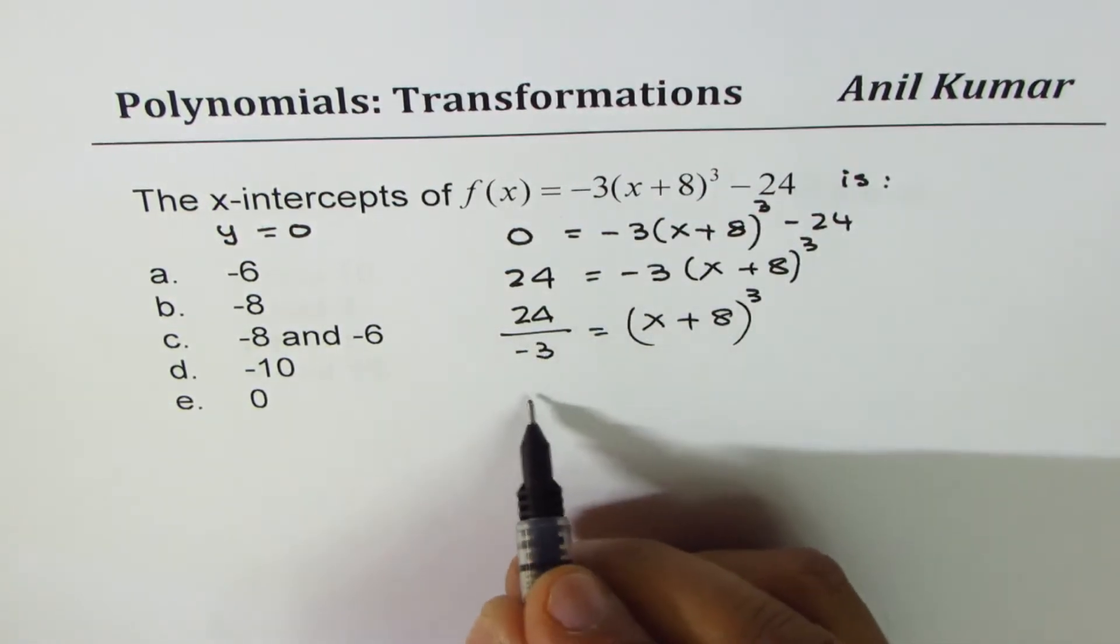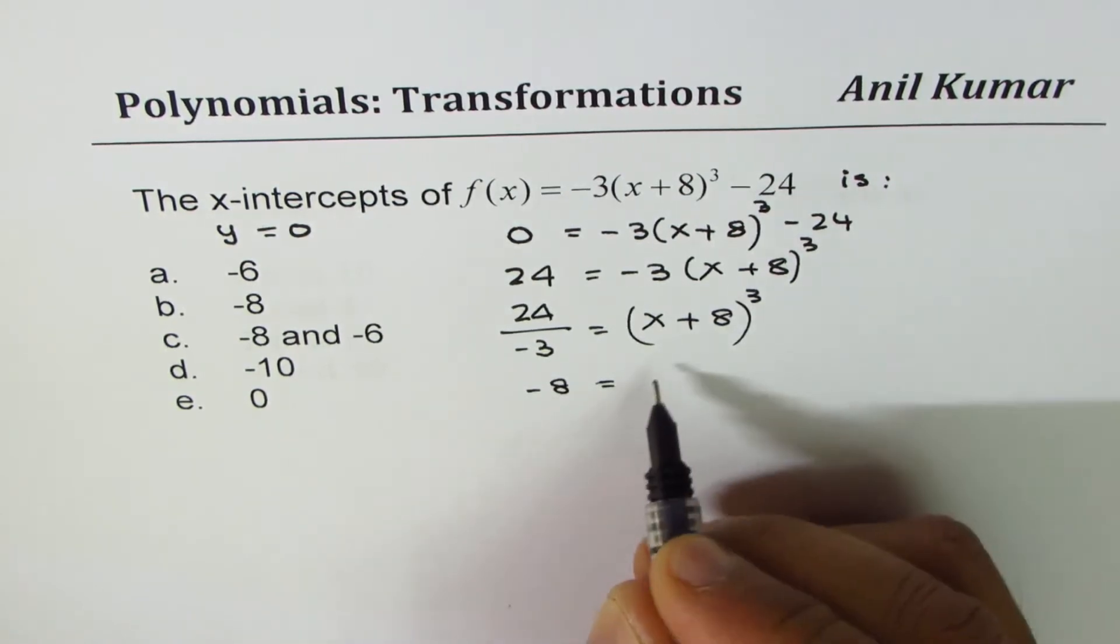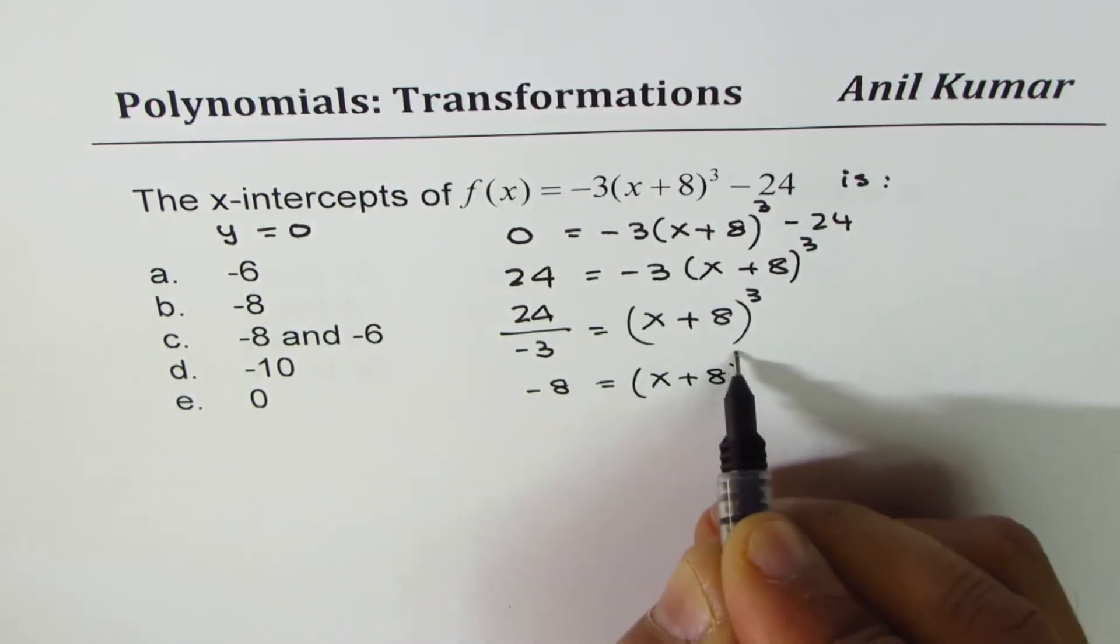That gives you minus 8. So minus 8 equals to (x + 8)³.